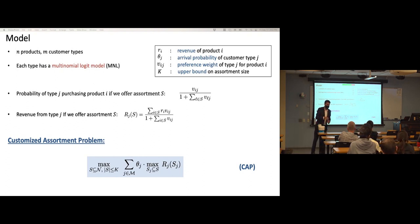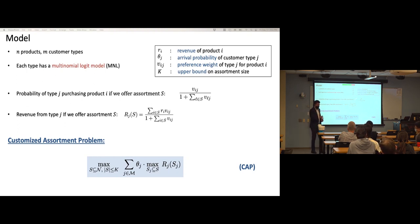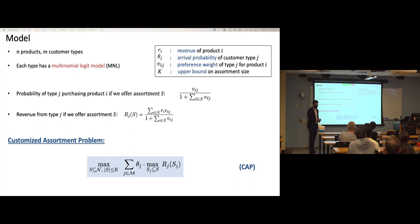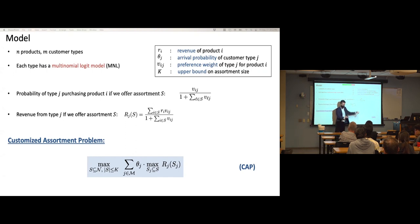On the validity of the MNL model: this goes back to McFadden's work in the 1980s. It is a classical choice model. One known result is that any choice model can be approximated within 1-epsilon by a mixture of multinomial logit models. It is also simple to estimate the v_{ij} parameters from data and is widely used in practice.